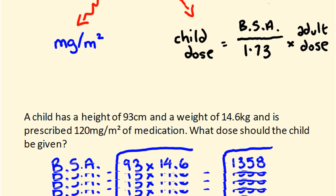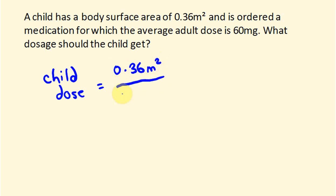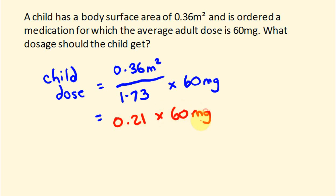Using that formula: the child dose equals 0.36 metres squared divided by 1.73, times the adult dose of 60 milligrams. So 0.36 divided by 1.73 equals 0.21 — that's almost a fifth. We then multiply 0.21 by 60 milligrams, which gives us 12.49 milligrams as the child's dosage.